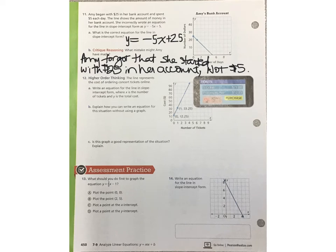Check your answer with number 11. For part A, the correct equation is negative 5x plus 25. Why did she make that mistake or what mistake could she have made? Well, Amy probably forgot that she actually started with $25 in her bank account. And when she spent $5 each day, it's decreasing by 5, but the beginning point or the y-intercept is not at $5. It's at $25. That's the amount of money that she had in her account before she began the spending of $5 each day.